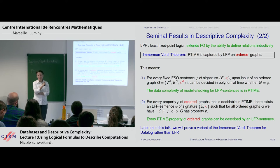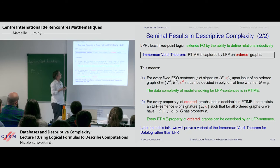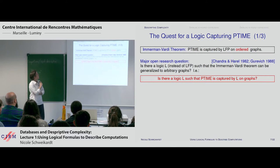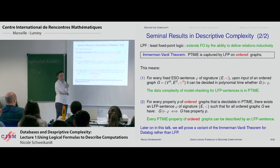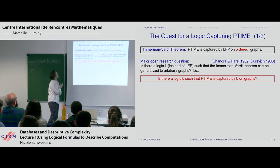Later in this talk, when I speak about datalog, we will prove a variant of this theorem — not about LFP but about datalog, and not about ordered graphs but about suitable representations of strings by databases. One of the major open questions in finite model theory and descriptive complexity is: can we get rid of the word 'ordered'? Can we get rid of this linear order? This is called the quest for a logic capturing P-time.